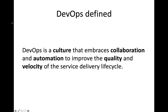It's a culture that embraces collaboration and automation, with the goal being to improve quality and velocity of the service delivery lifecycle. I've bolded most of the key terms in this definition that I really think define the essence of DevOps. It's a culture. It focuses on collaboration and automation. And its goal, ultimately, is to improve the quality and the velocity of the service delivery lifecycle. We'll be looking at these terms in more detail throughout the course.